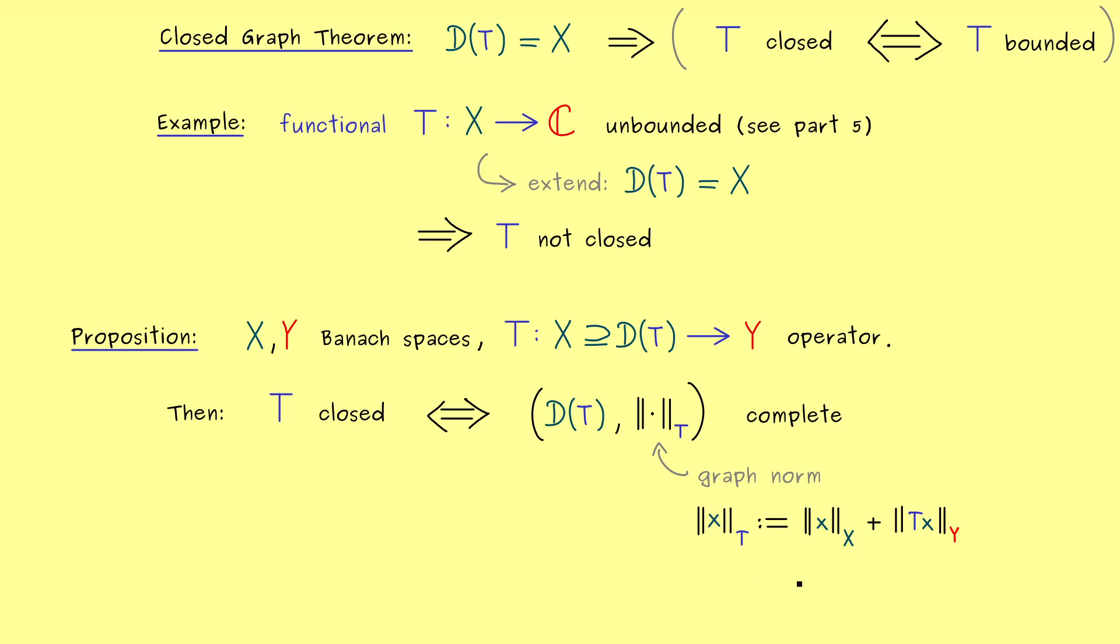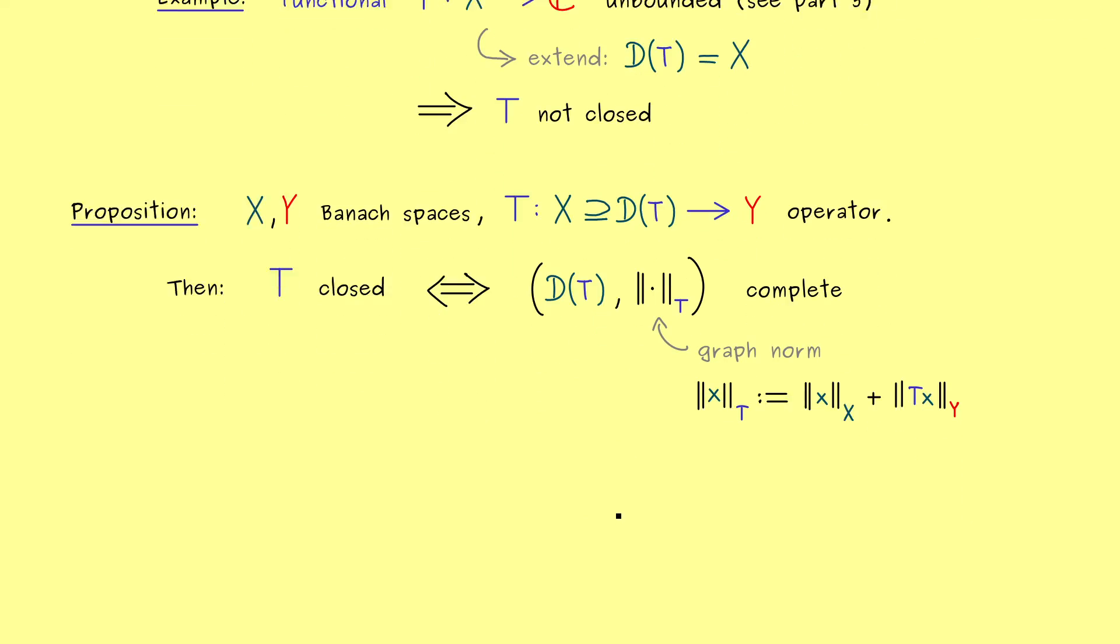Okay so you see this is a well-defined norm and it's called the graph norm because it uses the graph of T to define the value of the norm for x. And indeed this is already the crucial thing we need for the proof now.